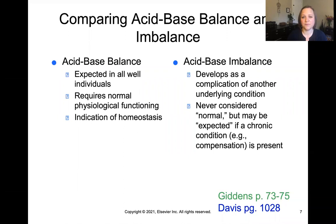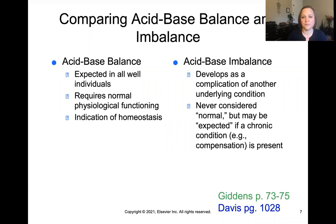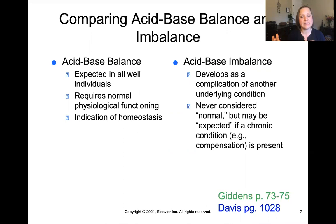Remember, our body has a set point — it's very comfortable in terms of temperature and acid-base and all these different parameters. An acid-base imbalance can develop as a complication from another underlying condition. It is never considered normal, but you might expect an imbalance if certain specific chronic conditions are present.